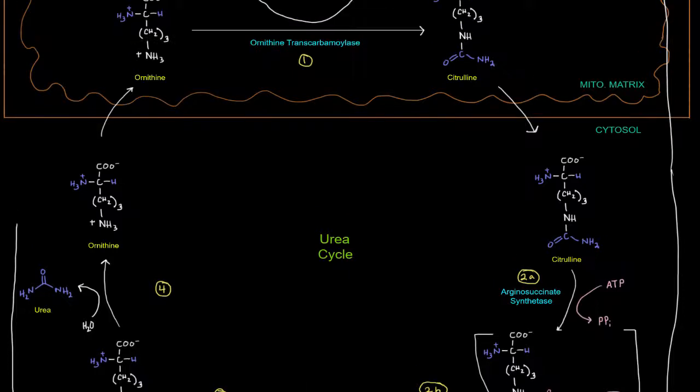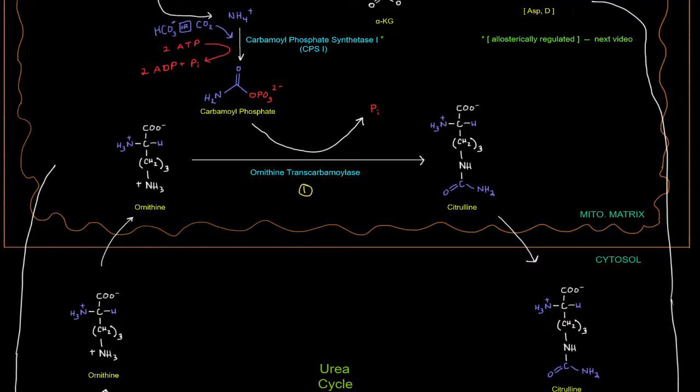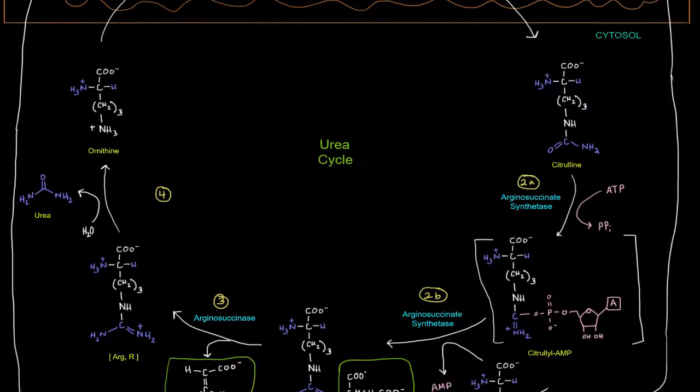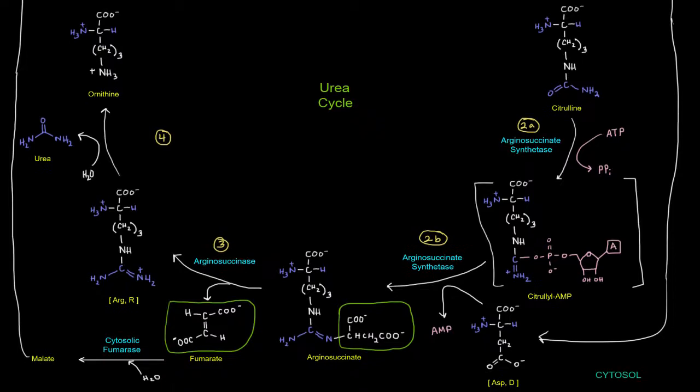And this is important because this malate can go back into the mitochondrial matrix and go through the TCA cycle, right. And go through the TCA cycle to give some NADH, which can give us some energy. Okay. All right.